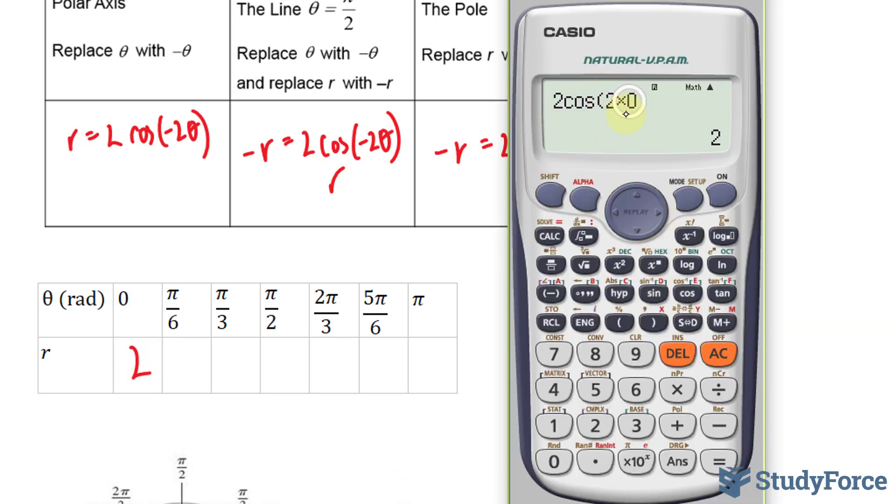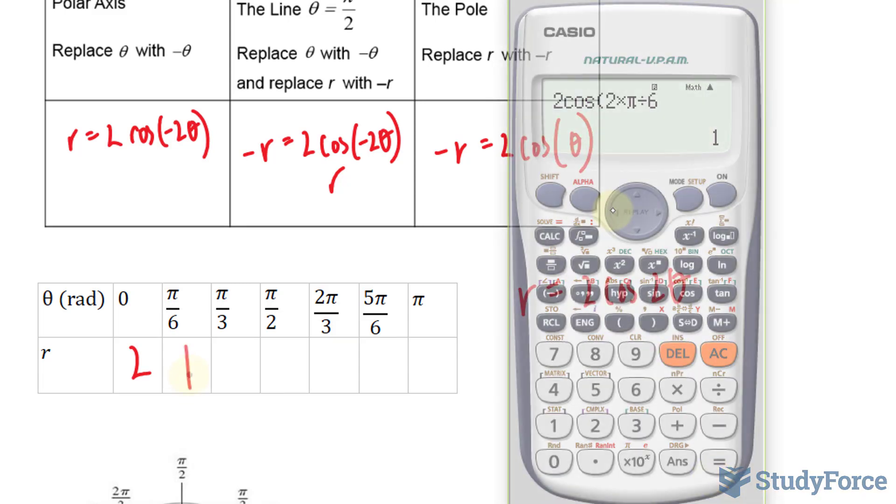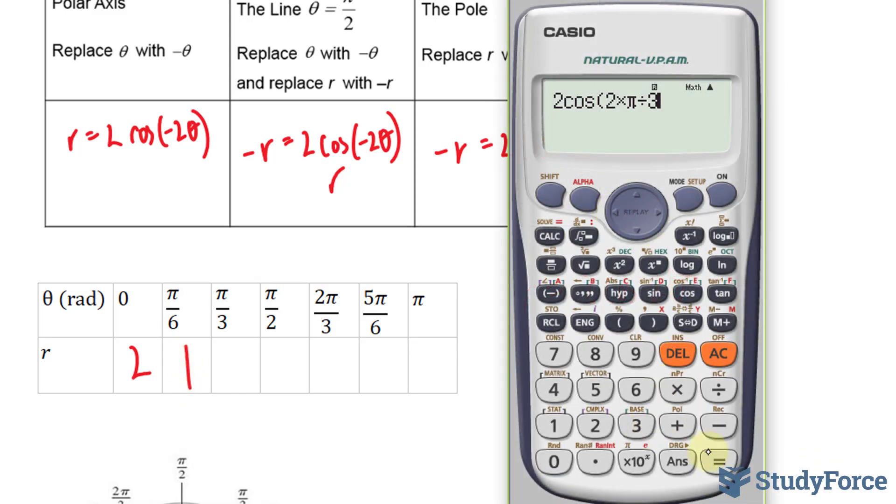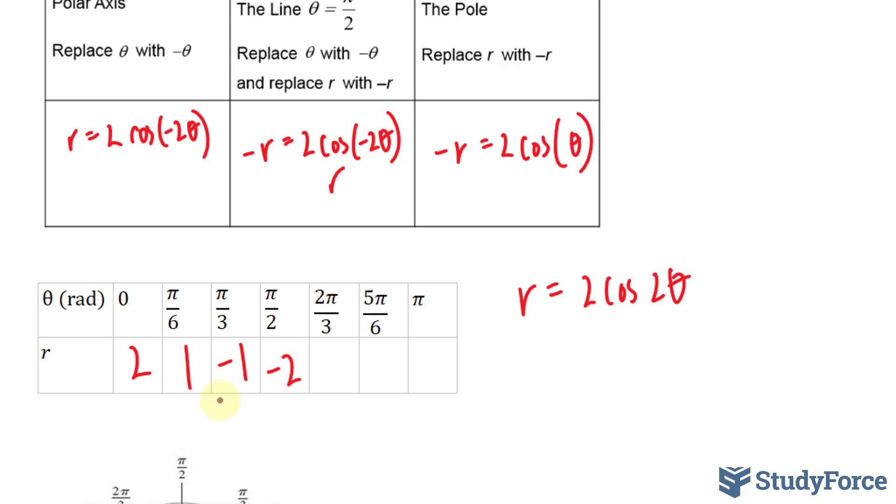Now let's replace this 0 with pi over 6. We end up with 1. Pi over 3, negative 1. Pi over 2, negative 2. Remember that a negative radius will make the point shoot in the opposite direction. I'll demonstrate that in a moment.